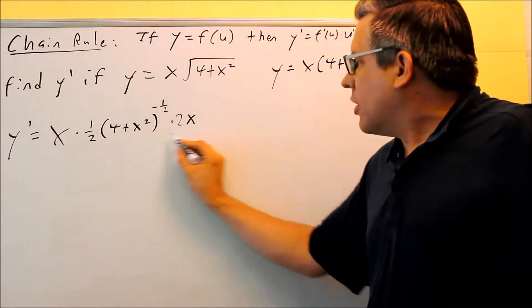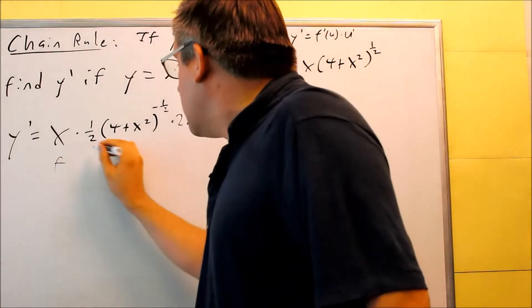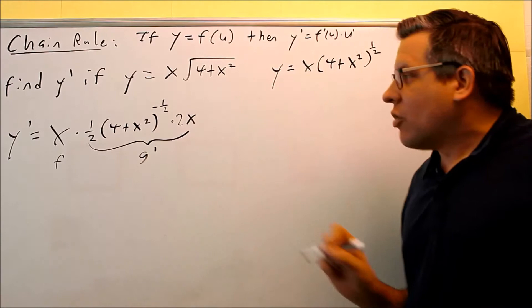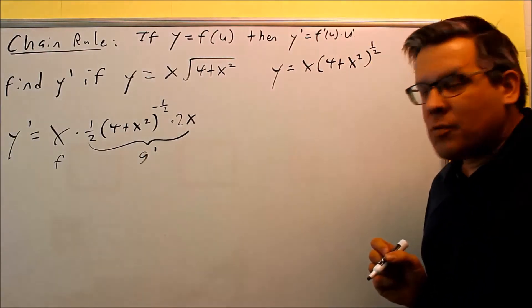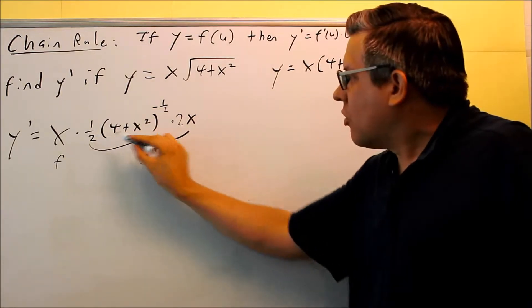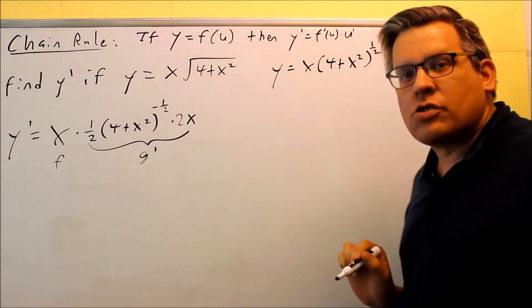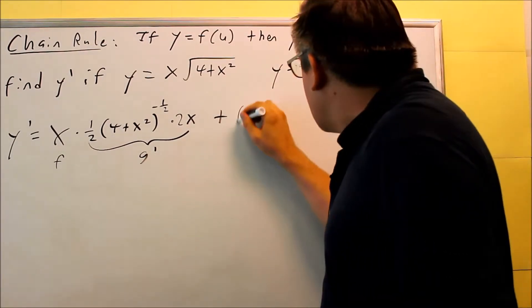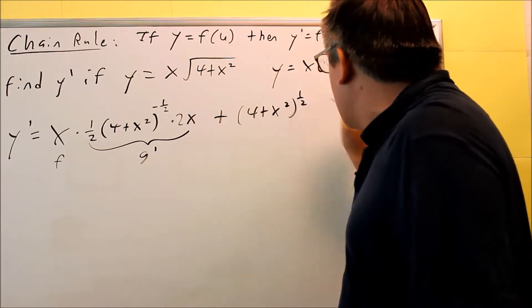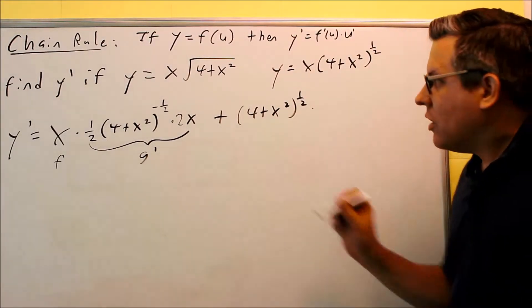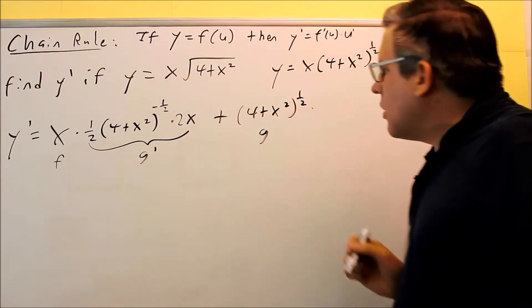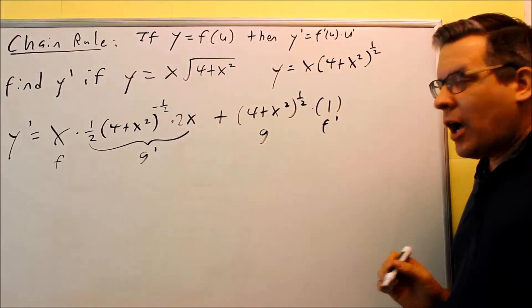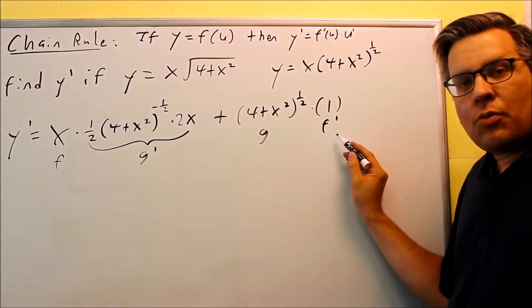So this whole part right here, I'm going to go ahead and label this for you so you can see the parts of the product rule. I have f, and this whole thing is considered my g'. So I got the first thing times the derivative of the second. This whole thing, we did chain rule. That's the derivative of the second part. Plus the second thing, so I'll leave it as (4 + x²) to the 1/2 power, times the derivative of the first. So this is the second thing. Derivative of the first, derivative of x is 1. That would be my f'. So you see, these are all the components of your product rule by doing that.